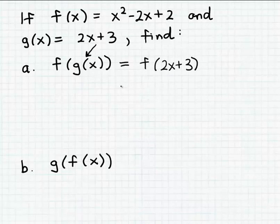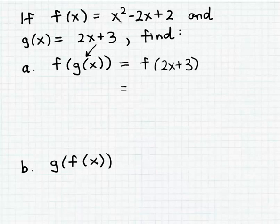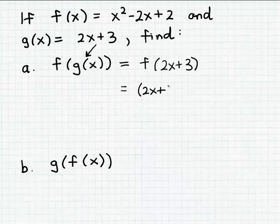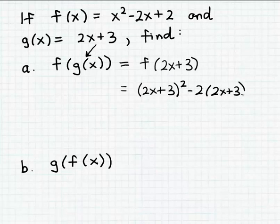To evaluate f of 2x plus 3, I'm going to take the expression 2x plus 3 and substitute it for the input variable x in the formula for f. That's going to give me (2x plus 3) squared minus 2 times (2x plus 3) plus 2.